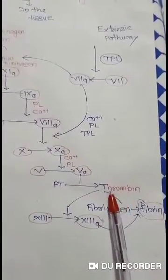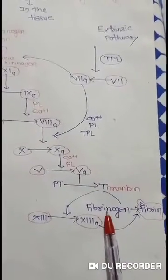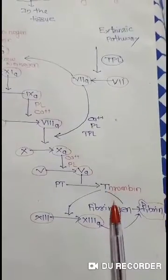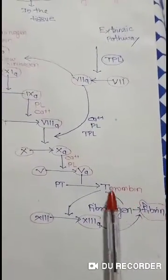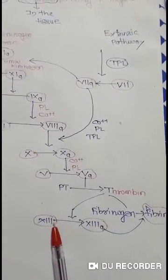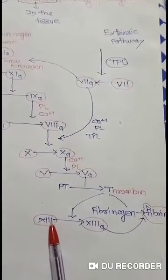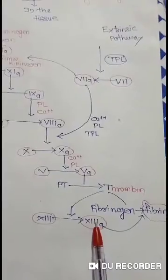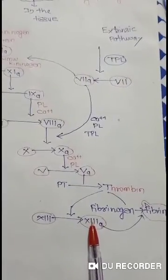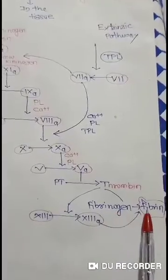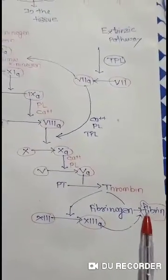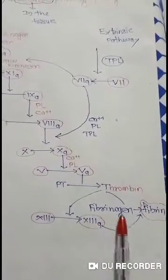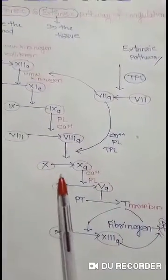This Thrombin converts Fibrinogen into Fibrin. Thrombin also converts Factor Number 13 — the Fibrin Stabilizing Factor — to Activated Factor Number 13. This Fibrin Stabilizing Factor helps in the conversion of Fibrinogen to Fibrin, and finally stabilizes the Fibrin. This completes the Intrinsic Pathway of Coagulation.